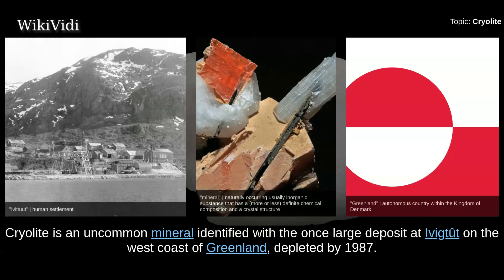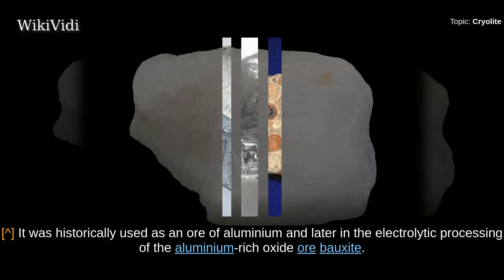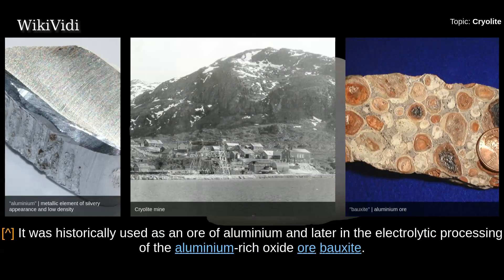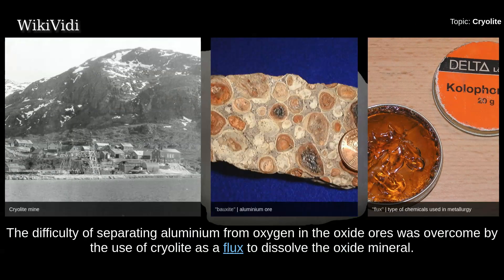Cryolite is an uncommon mineral identified with the once-large deposit at Ivigtut on the west coast of Greenland, depleted by 1987. It was historically used as an ore of aluminium and later in the electrolytic processing of the aluminium-rich oxide, or bauxite. The difficulty of separating aluminium from oxygen in the oxide was overcome by the use of cryolite as a flux.